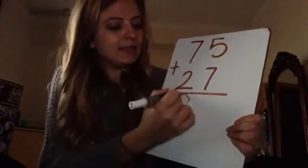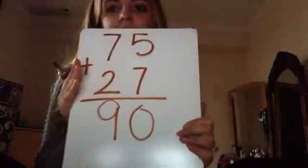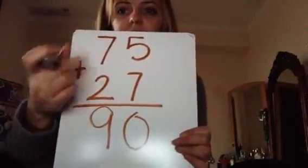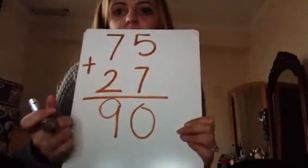Okay, it is 90. Now I need to add my ones. So I'm adding 5 and 7, and 5 plus 7 equals 12.